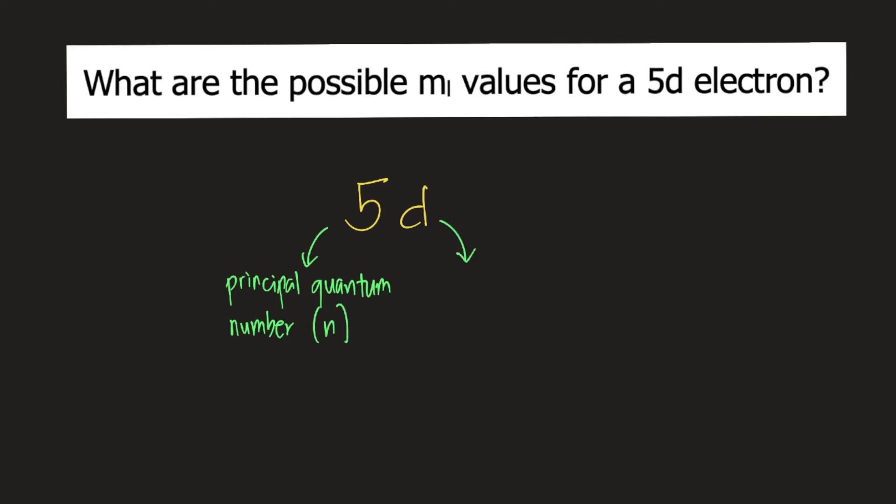D here will tell you the azimuthal quantum number, or L. If the letter is S, the azimuthal quantum number L is 0. If the letter is P, the azimuthal quantum number is 1. If the letter is D, the azimuthal quantum number is 2. If the letter is F, the azimuthal quantum number is 3.